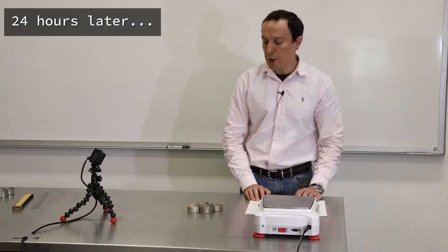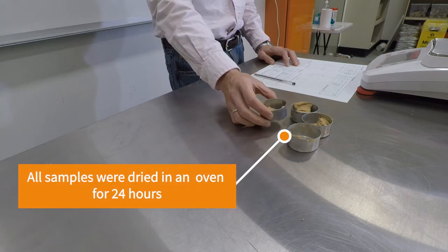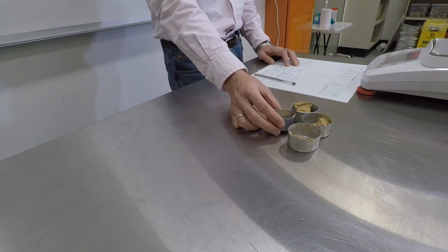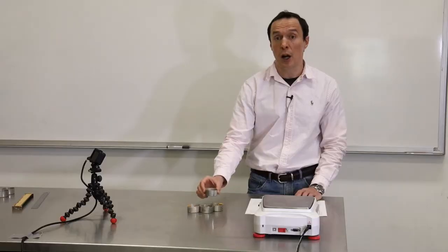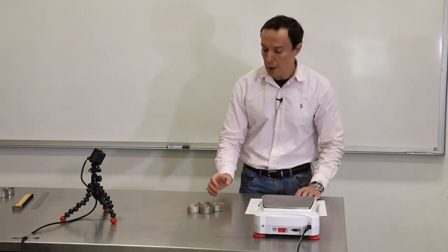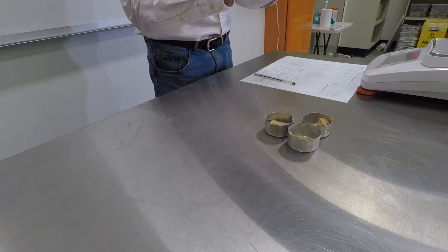Now we'll continue the liquid limit test. We take the soil samples out of the oven after 24 hours, and you will see that they're dry. We need to know the mass of the soil, so we'll do simple measurements.